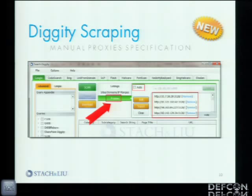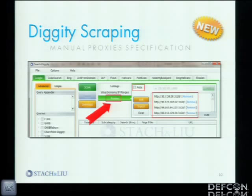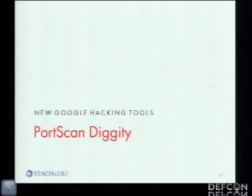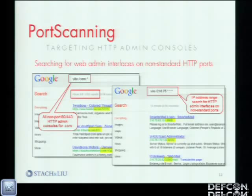If you need a list of valid open HTTP proxies, there are services like HideMyAss.com where you can pay about $25 for a lifetime subscription and get 1,500 known-good open HTTP proxies emailed to you every day. Import those into this tool and now you're effectively scraping Google and Bing. So with that, right into our first new attack tool: PortScan Diggity.